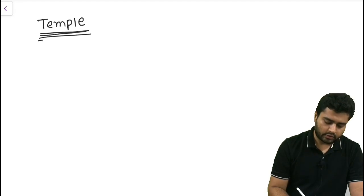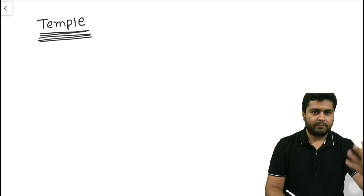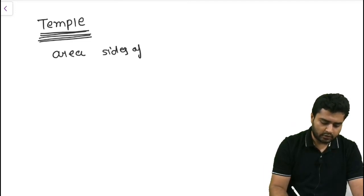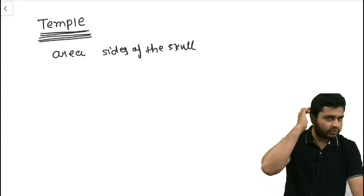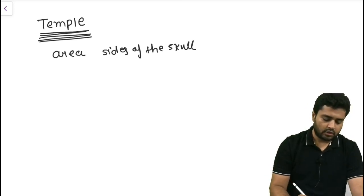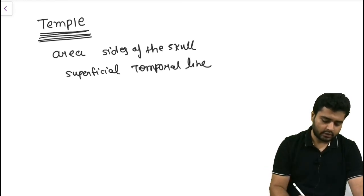Let's start recording about the temple. The temple area is the area situated on the sides of the skull. Its upper boundary is the superficial temporal line and the lower boundary is the zygomatic arch.